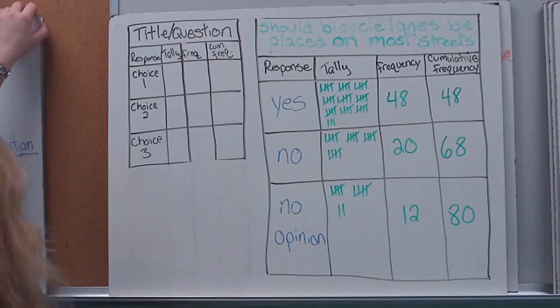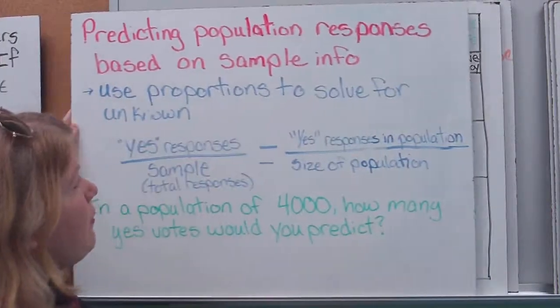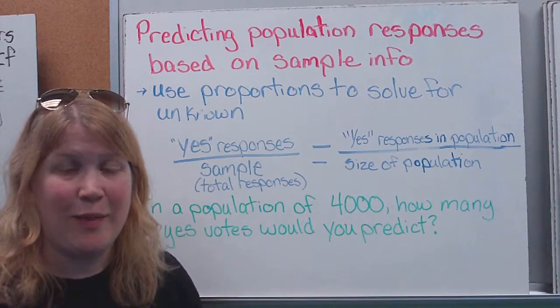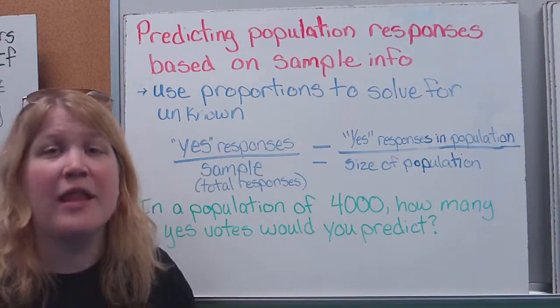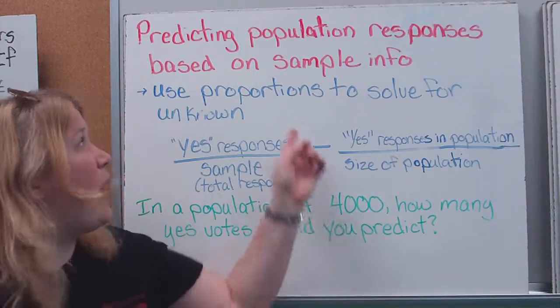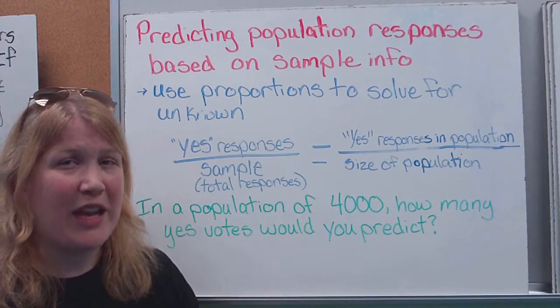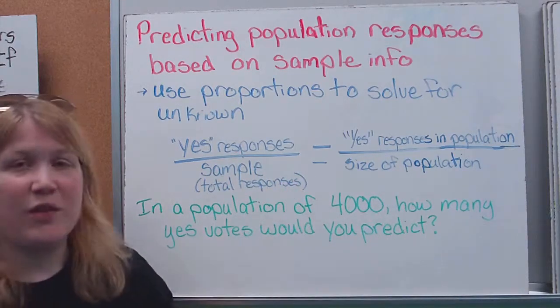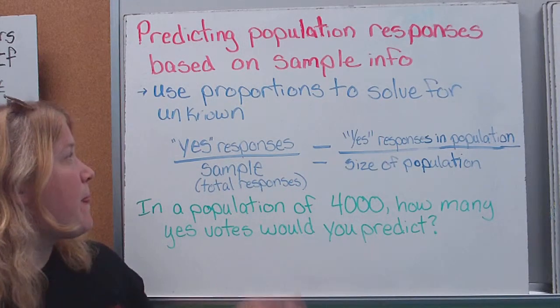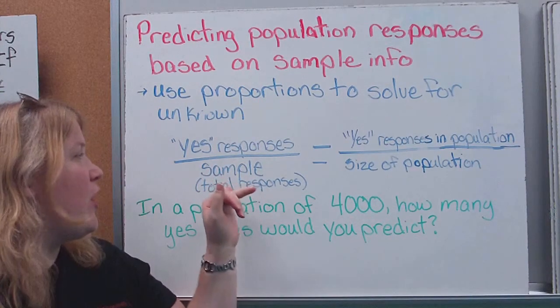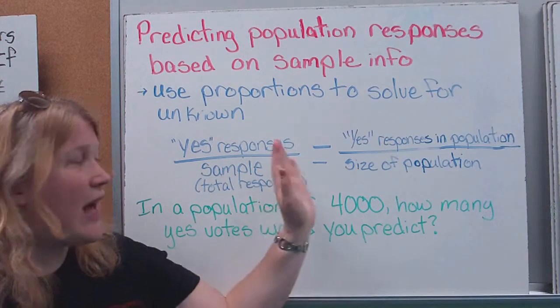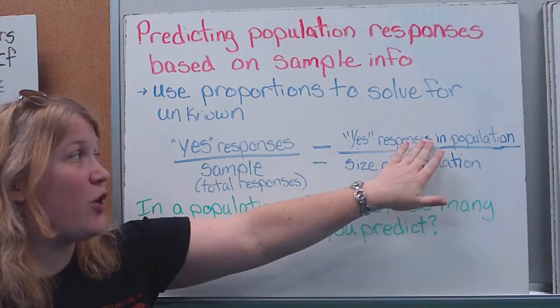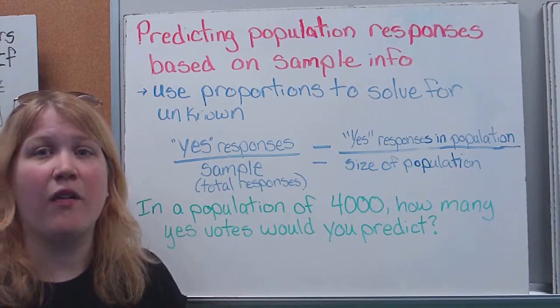So, based on this, we can then start to draw some conclusions, which we would call predicting our population response. So, what we're going to do is we said we only have a small sample. I asked 80 people. That's obviously not an entire population. That's a sampling of a population. So, based on the people I asked, what I want to do is predict how many people in the entire population would also go along with these ideas or agree with the information that I got. The way we're going to do that is we're going to set up a proportion, which you know how to solve for now. So, I'm going to start out with the yes responses that I received to the question over my sample or my total number of responses. That's going to be equal because we're assuming that the population should be proportional to my sampling. So, I can solve for my total yeses that I have in a population if I'm given the size of the population.